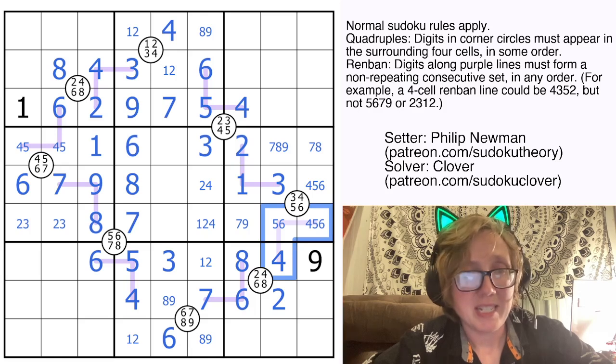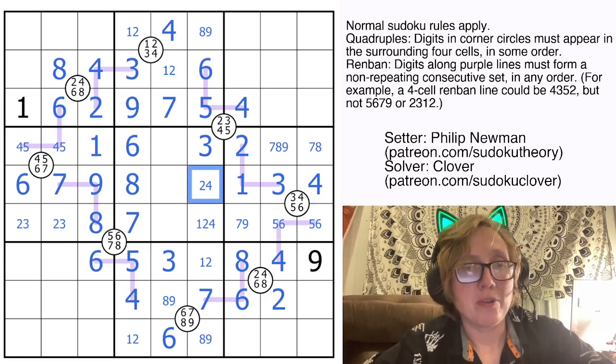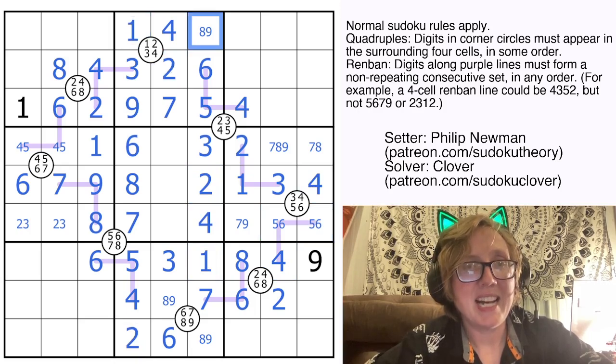So similar reasoning, this can't be a 4, so that's a 4, making this a 2, a 1, and a 4. And I'm going to go ahead and resolve the effect that that has on these regions using Sudoku.